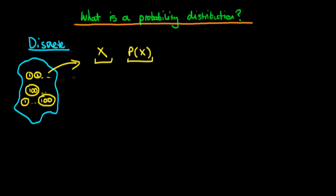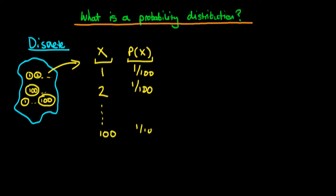In this case, where numbers one, two, all the way through to one hundred are all equally likely, it's quite easy. The probability of getting the value one is just 1/100, the same for two, and for all numbers in between — right up to one hundred, which also has a 1/100 chance of being pulled out.